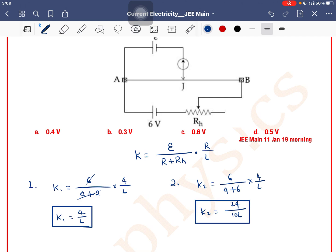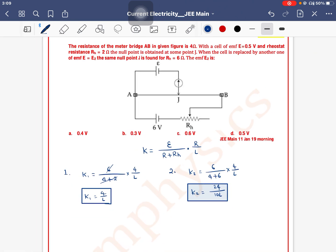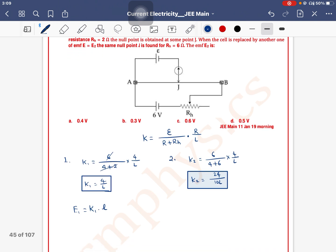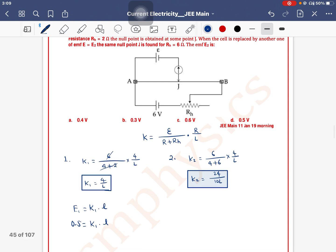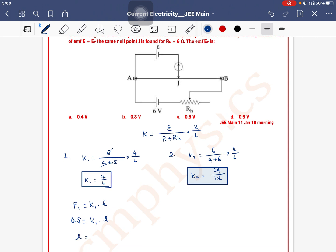So K1, K2 value, K2 value use karke, we will solve. So first, what is given, with a cell of E 0.5 volt, the null point is obtained at some point J. So when E1, E1 is equal to K1 into L. E1 is 0.5. So 0.5 is equal to K1 into L. Then L's value, what will it be here? K1 divided by 2. Equation number 1.